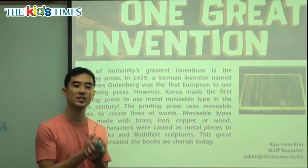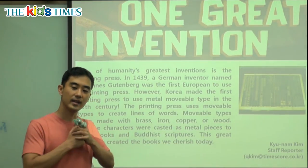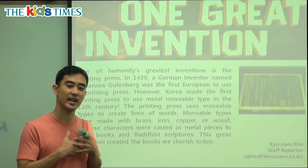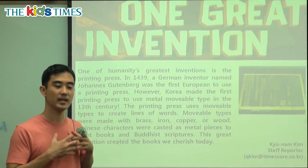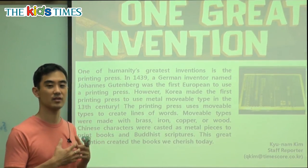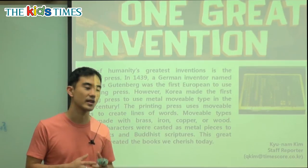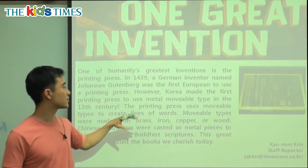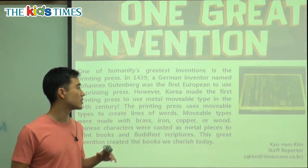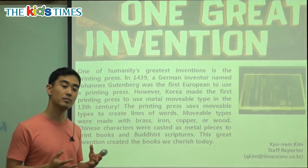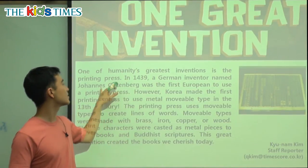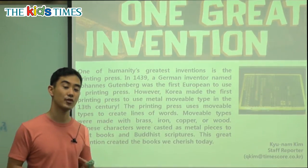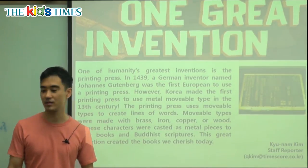Cherish means we adore, we keep safe, we protect, we think something is important — something we love. We all love books. So, Korea was the first to make the first metal movable type, and Johannes Gutenberg was the first European man to do it.